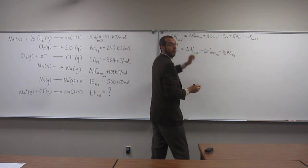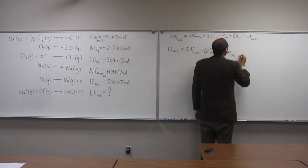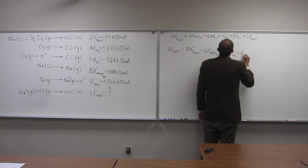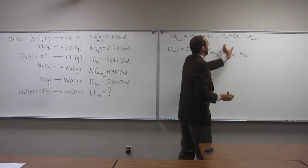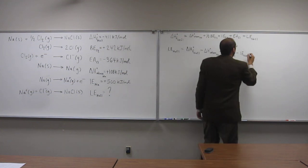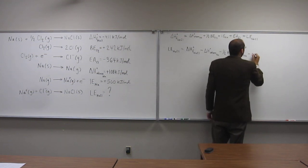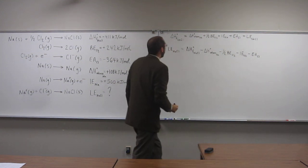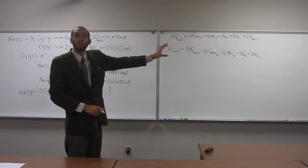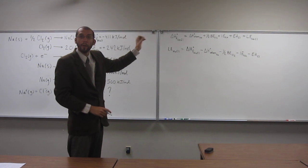So, we're going to move this one over, minus the ionization energy of sodium, and then move this one over, minus the electron affinity of chlorine. So, would that be the new equation there, from what we see up there?